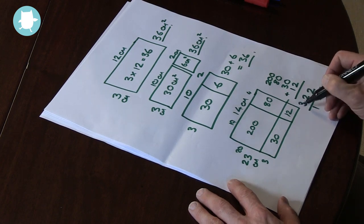And that gives us four separate multiplications. Adding up these four areas gives us the answer: 322.